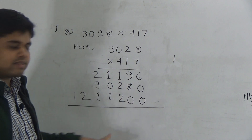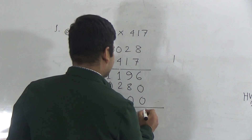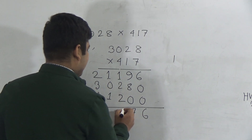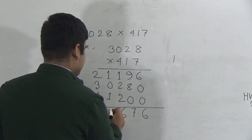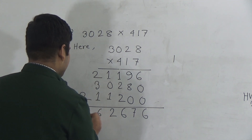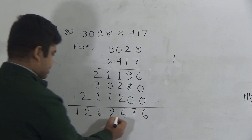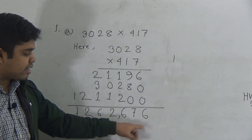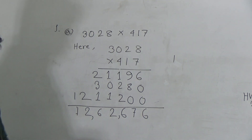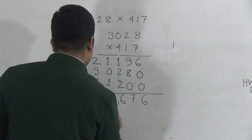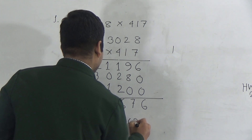My students, we know multiplication is a short process of summation — for this reason we multiply then add the partial products. Now adding: 6, then 0 plus 0 is 0, 9 plus 8 plus 0, carrying as needed — the answer is 1,262,676. I hope you have understood. As our solution is done, we must write the answer — if you don't write the answer, some marks will be deducted.